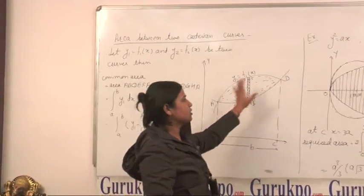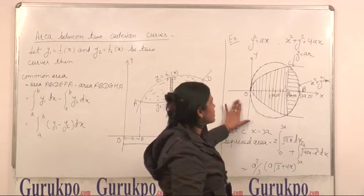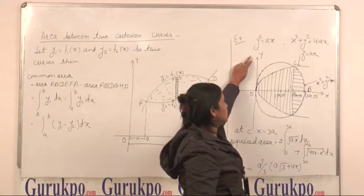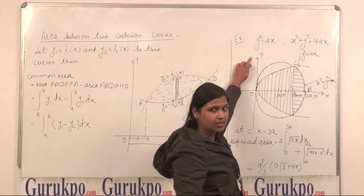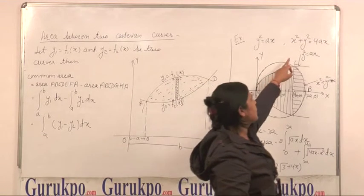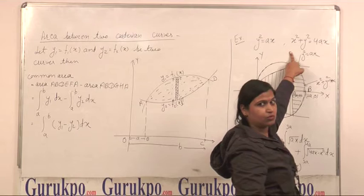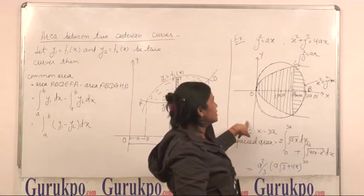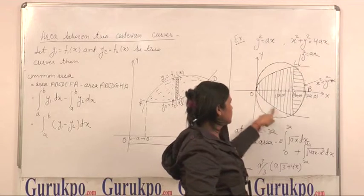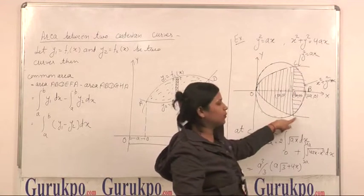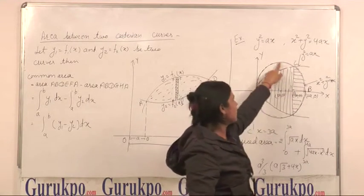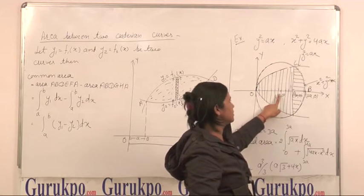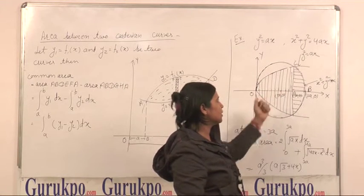We can explain this by this example. In this example, we want to find out area between these two curves, which is y square equals Ax, which is equation of a parabola. And this one is x square plus y square equals 4Ax. This is equation of a circle, whose center is (2A, 0) and radius is 2A.